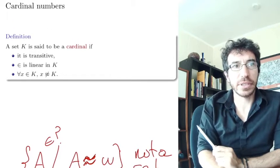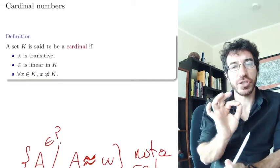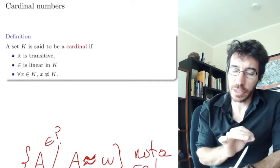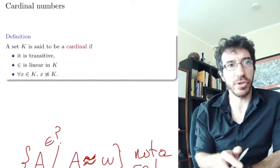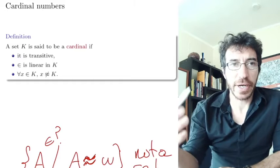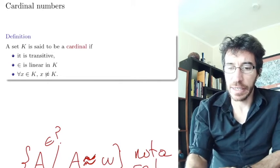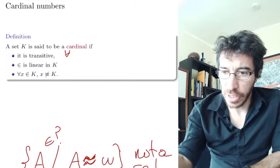So the cardinal numbers are going to be these things. This definition might not make any sense for now. I mean, you understand the words, but we've seen this before. So a set K is said to be a cardinal if it satisfies three properties. It's transitive. Remember what transitive means, that for every...